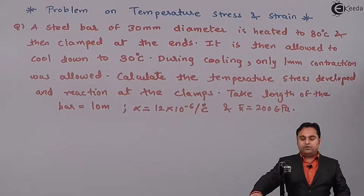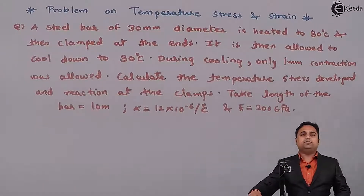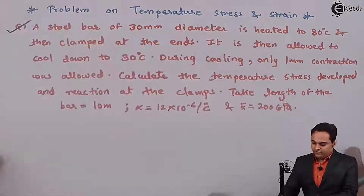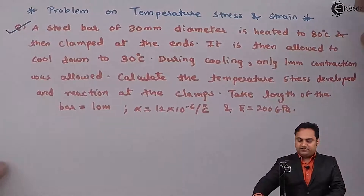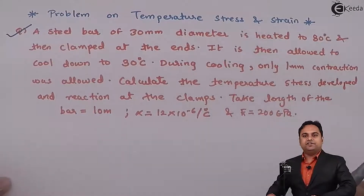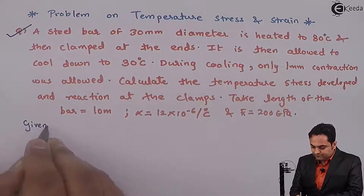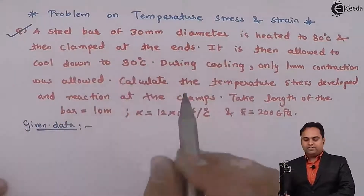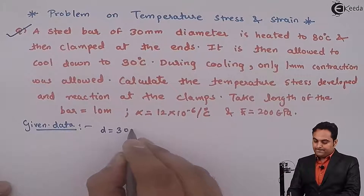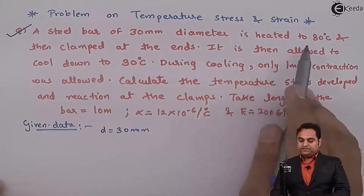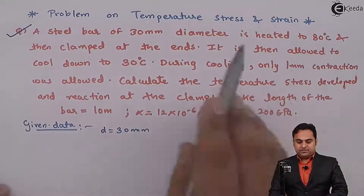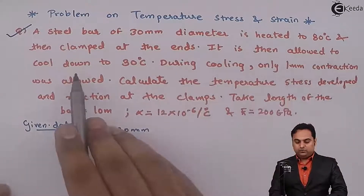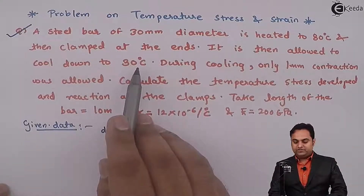Hello friends! In this video we will see a problem on temperature stress and strain. Here we have a question, and whatever is given I will write in the form of data. A steel bar of 30 mm diameter is heated to 80 degree Celsius and then clamped at the ends. It is then allowed to cool down to 30 degree Celsius.